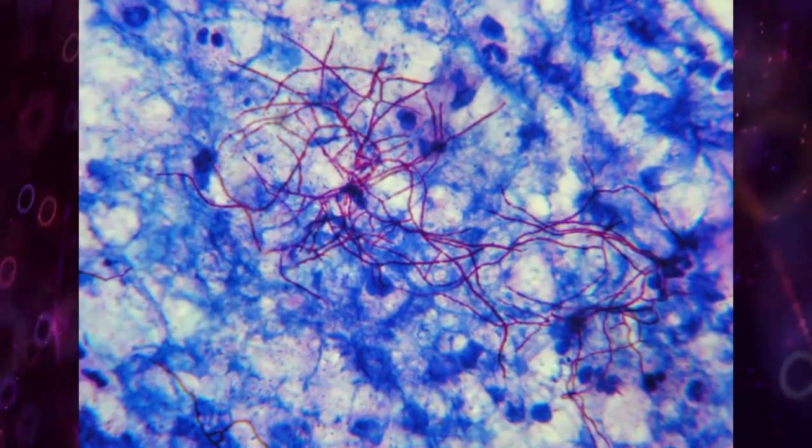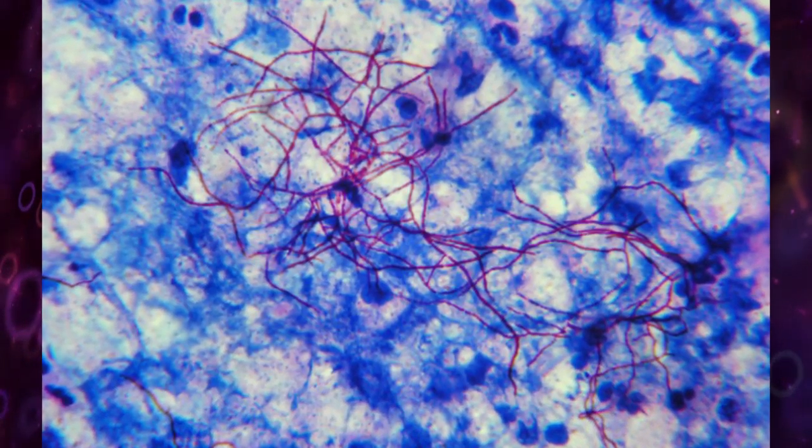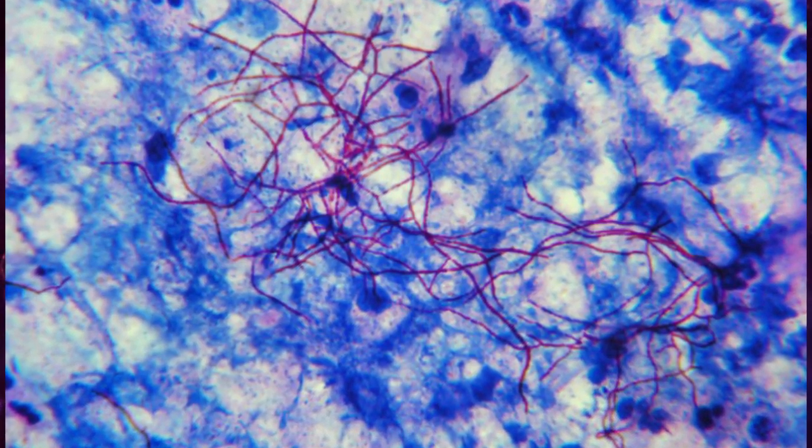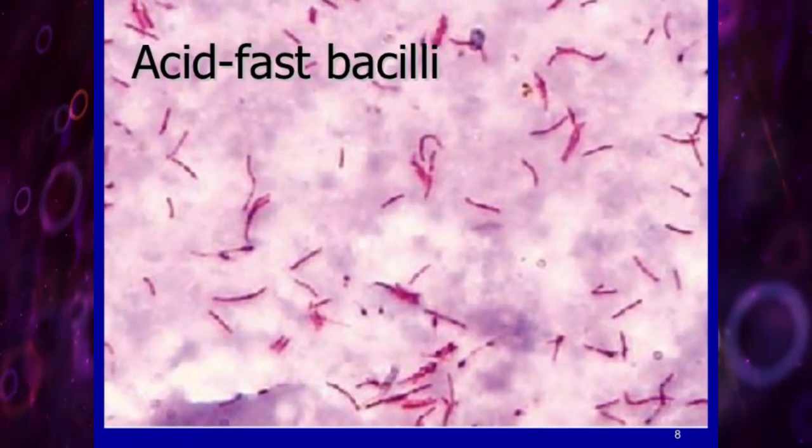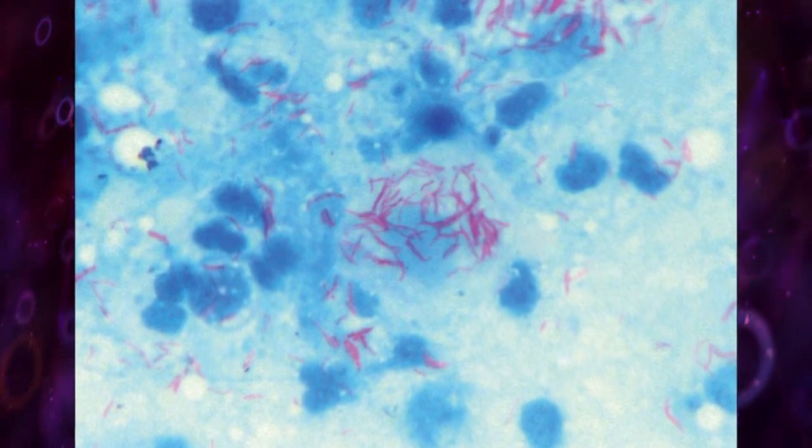Acid-fast bacilli can be seen in red color, straight or slightly curved rods, occurring singly or in small groups. Background material and cells can be seen in blue color.